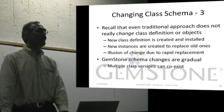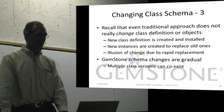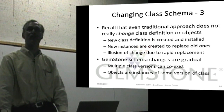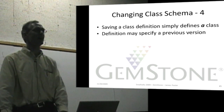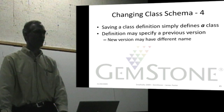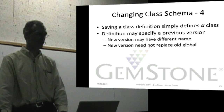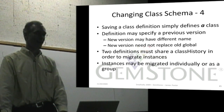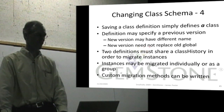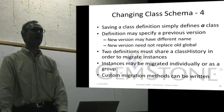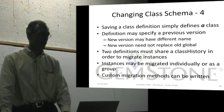So in Gemstone, schema changes are gradual. You can create a new class, and it can coexist with other classes, with other definitions for a class. Objects are instances of some version of the class, but maybe not the current, most recent version. Saving a class simply defines a class, and the definition can specify a previous version. You can even have a new name for a class but have it be a version of an old class. Two definitions share a class history, and then there's protocol for migrating objects individually or as a group. And you can create your own methods that help in the migration. So if you were changing degrees to radians, you could go through a formula and make the modifications.